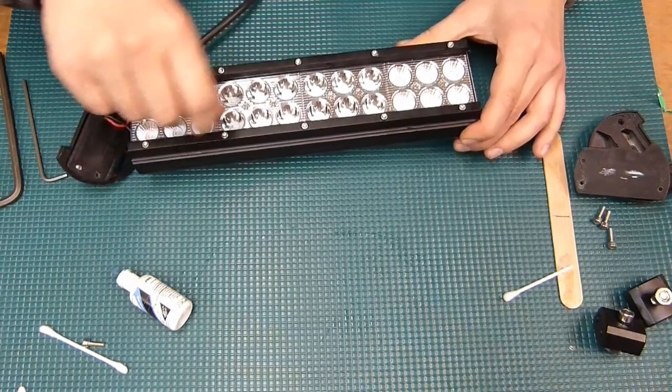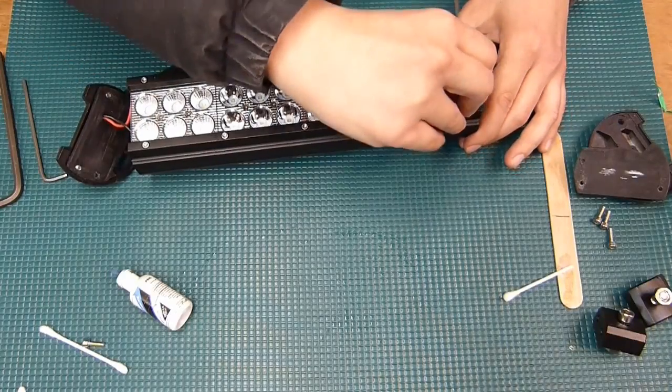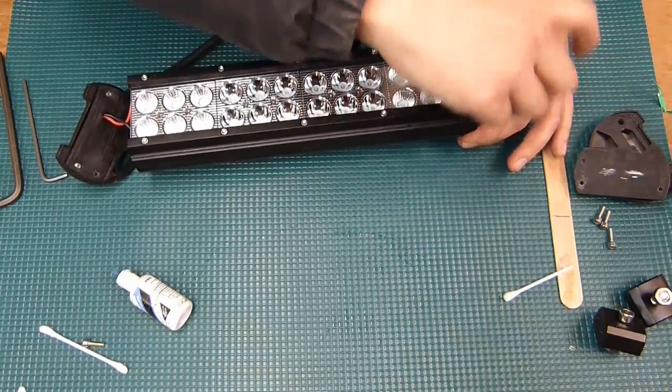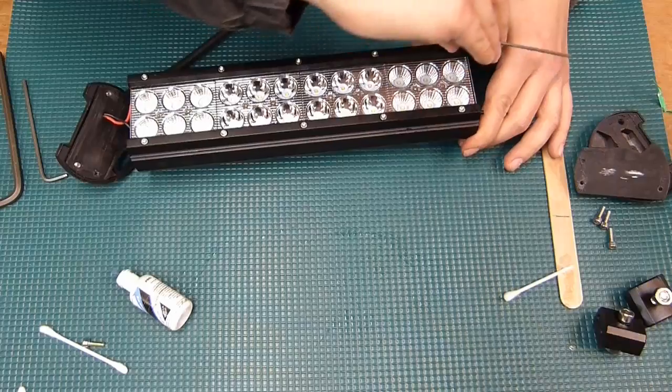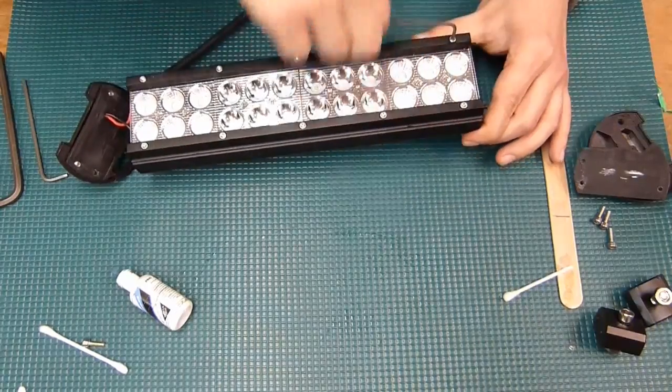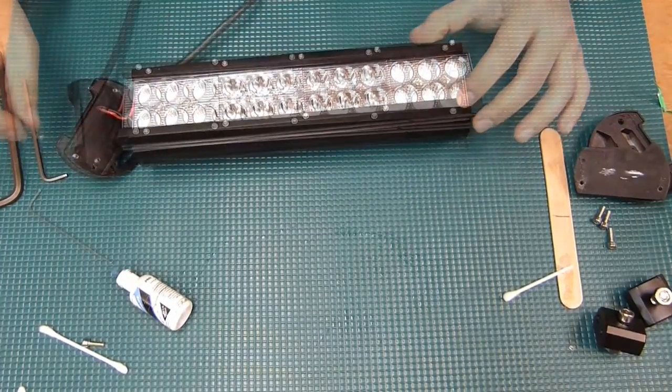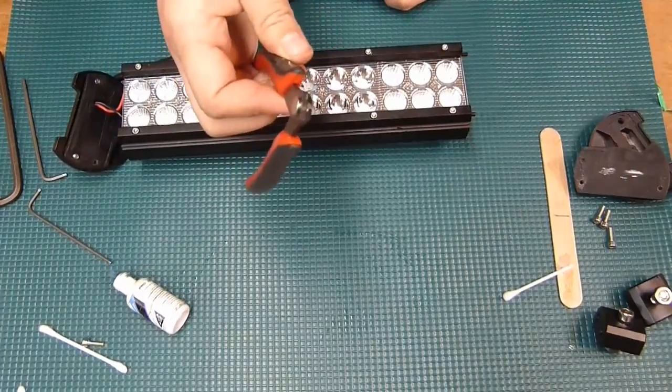So we're doing a cross bolt pattern. I started from the middle and then worked my way out. So when in doubt, just do the cross bolt pattern. This will keep stuff from walking out of position.